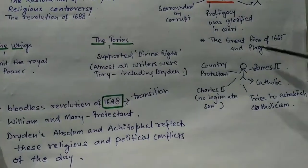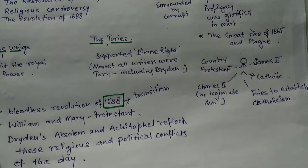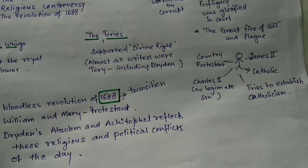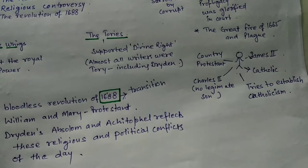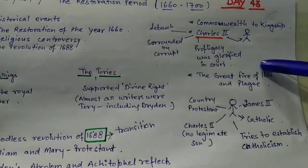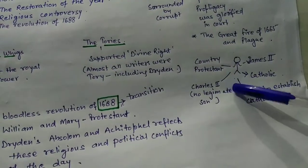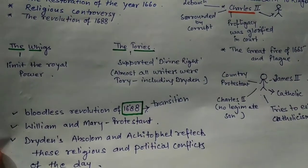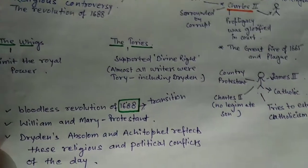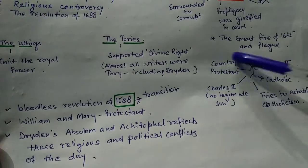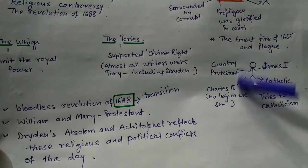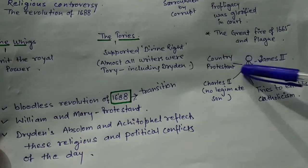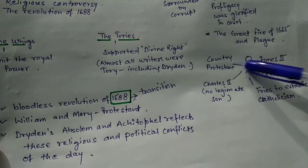James II was the brother of Charles II. Charles II did not have a legitimate heir, so the question arose: who would be king after Charles II? This was a serious problem. The country was Protestant, and there were two kinds of churches in England — Protestant and Catholic. James II was Catholic, so there was an obvious clash between a Catholic king and a Protestant country.